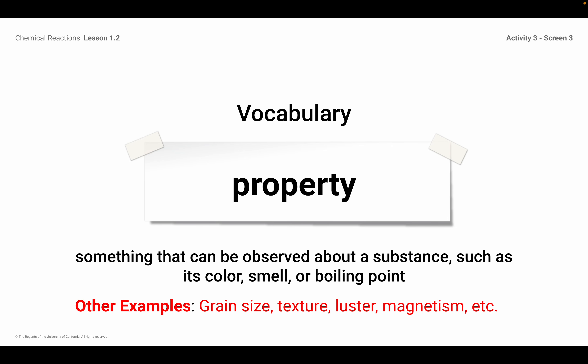So first of all, we have the word property. Find this in your notes and go ahead and write down the definition. Property, in other words, property of matter. The property of matter is something that you can observe about a substance, and if you remember in our element research when we did the superhero, you guys looked up physical properties of matter as well as chemical properties of matter. So these are just things that can be observed about that specific substance that are unique to that substance and help identify the substance. Such as its color, smell, boiling point.